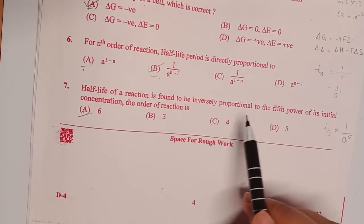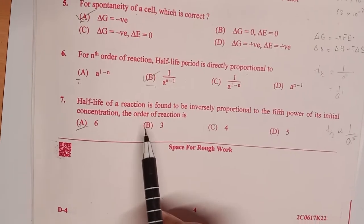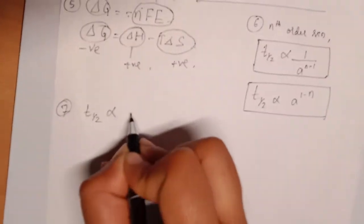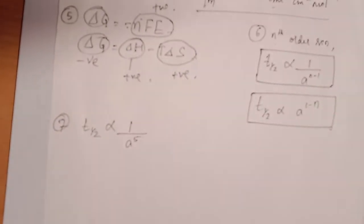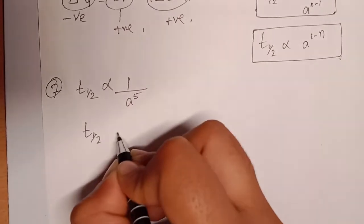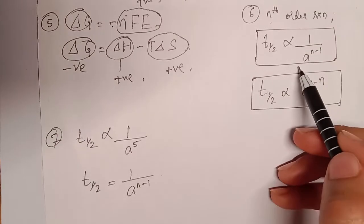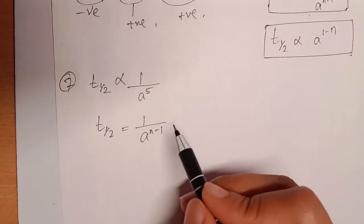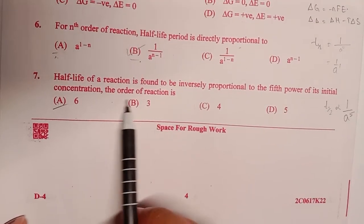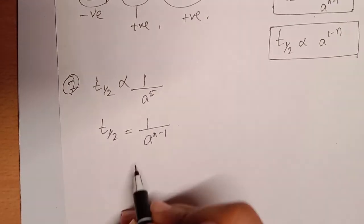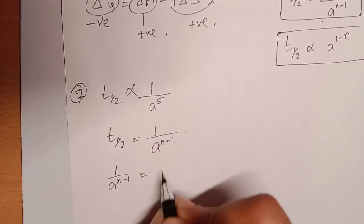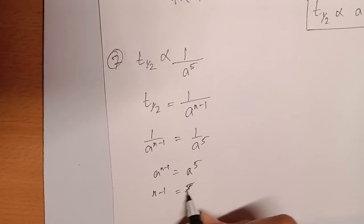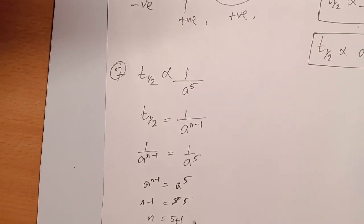Seventh question: half-life of a reaction is found to be inversely proportional to the fifth power of its initial concentration. The order of the reaction is? Since T_half is proportional to 1 divided by A to the power (n minus 1), and it is inversely proportional to A to the power 5, we equate: A to the power (n minus 1) equals A to the power 5, so n minus 1 equals 5, giving n equals 6. Answer is option A.